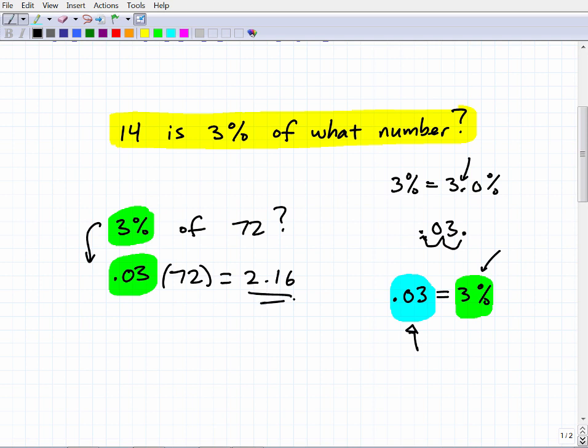So 2.16 is 3% of 72. So hopefully you're like, oh yeah, I know how to do that. These are real easy type problems. I mean, this is the kind of stuff that you do when you're shopping, right?